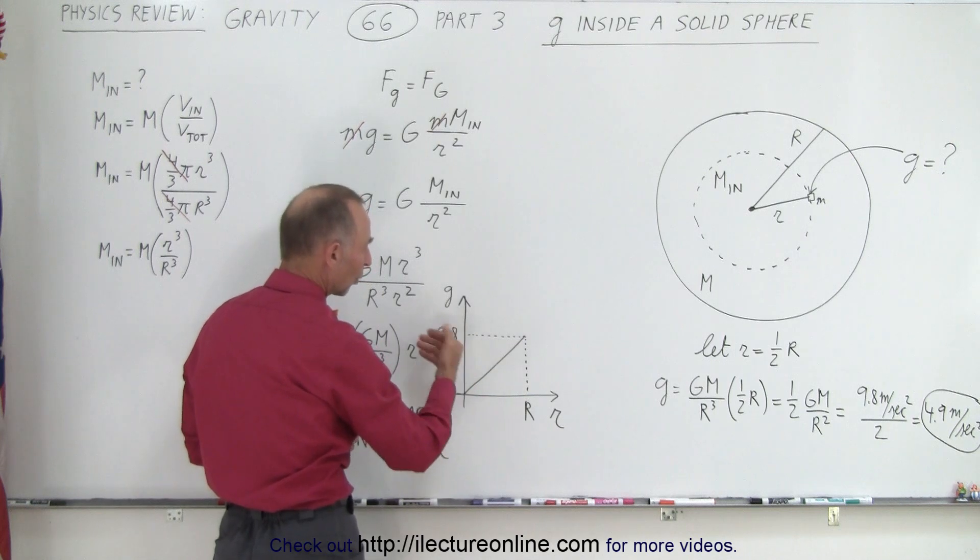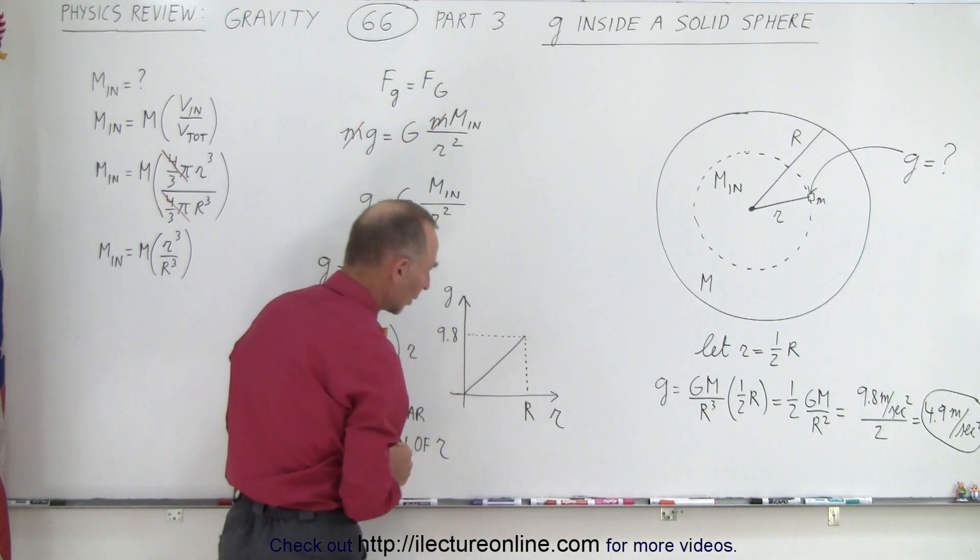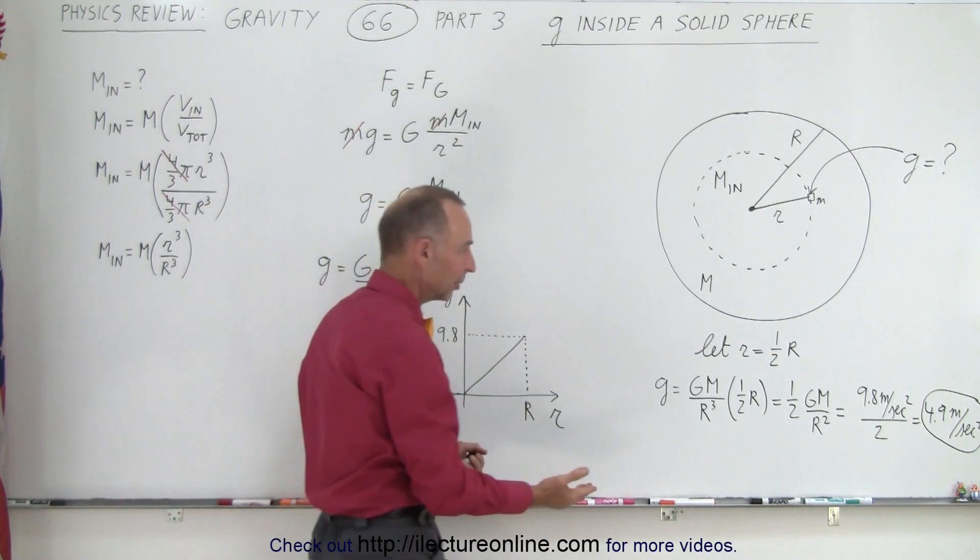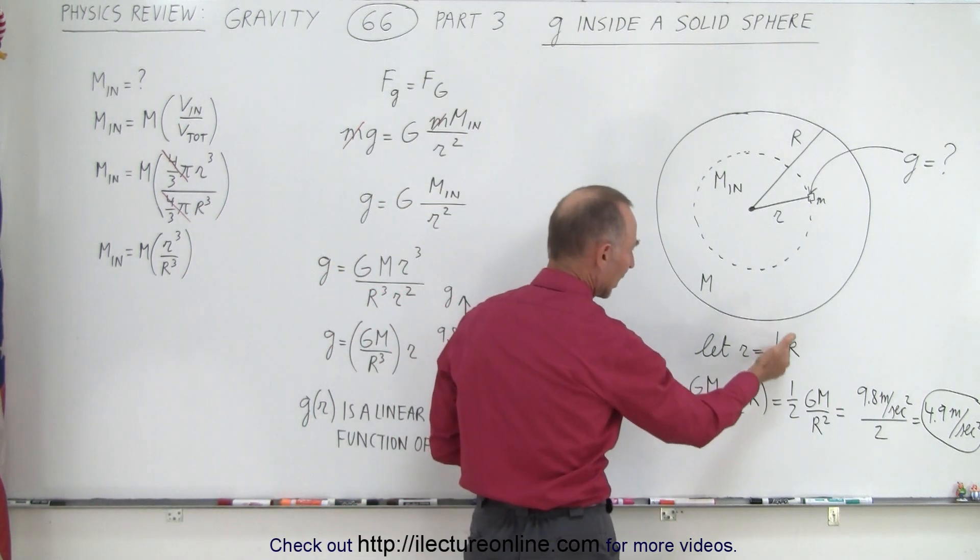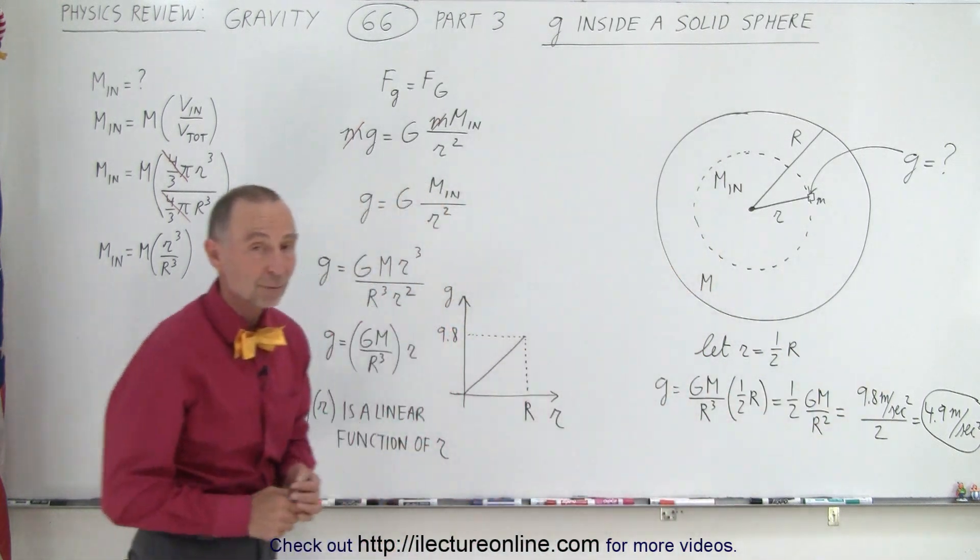If you're a quarter down, it'll be a quarter of 9.8. If three quarters, if you're only one quarter down, it'll be three quarters, 9.8, and so forth. So in our example, we replace little r by one half big R, and we can see that, indeed, we get 4.9 meters per second squared.